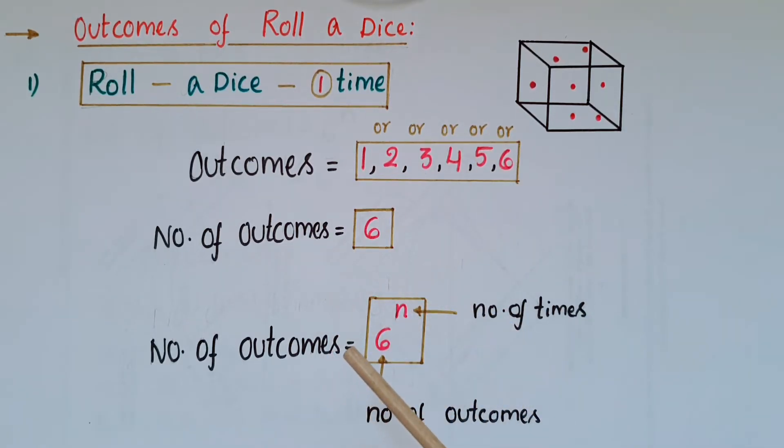Number of outcomes we can find by using the formula 6 to the power of n. So here 6 is number of outcomes when roll a dice one time and n is number of times.